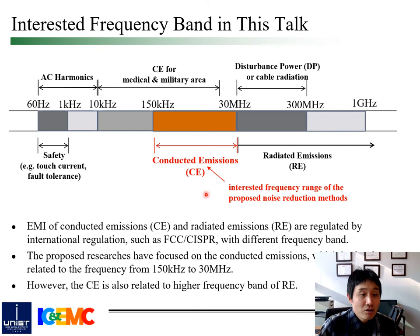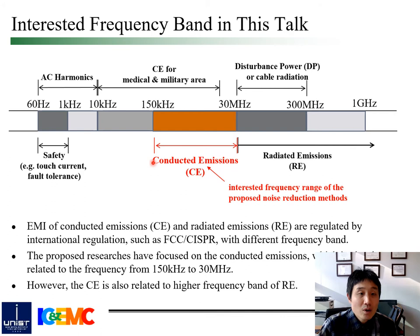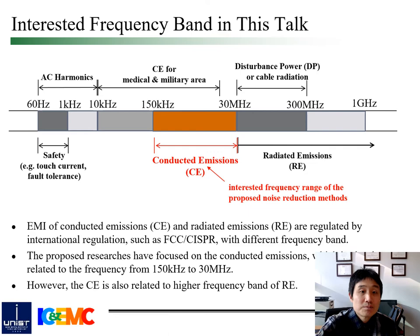The EMI is regulated in different frequency bands depending on the regulation, such as conducted emission and radiated emission. The proposed research work mainly focused on conducted emissions from power electronic systems. The interested frequency band of conducted emission noise is from 150 kHz to 30 MHz. But this conducted emission is also related to higher frequency bands of radiated emission, or disturbance power, due to cable radiation.